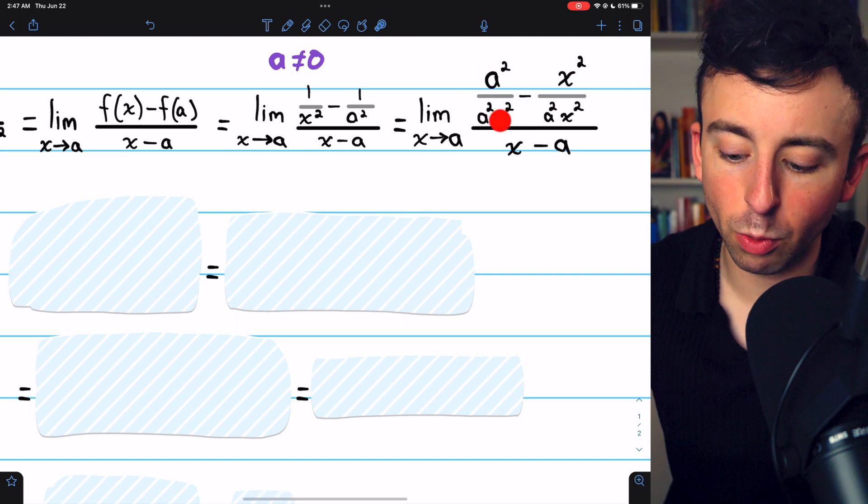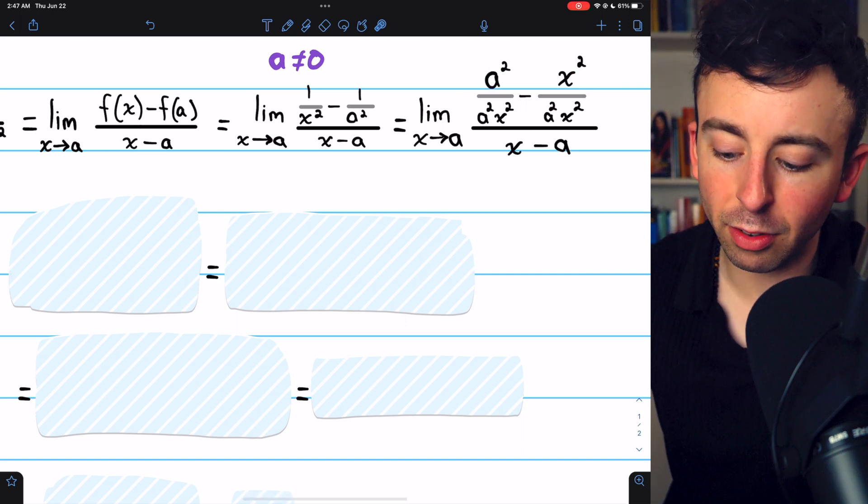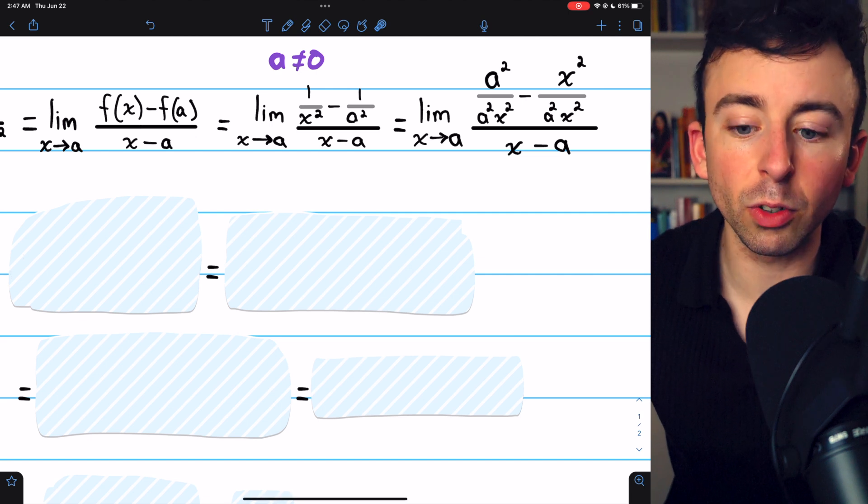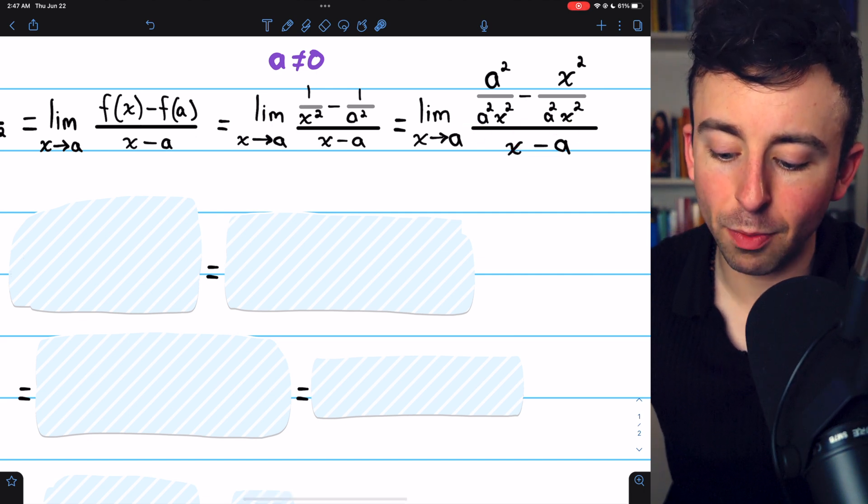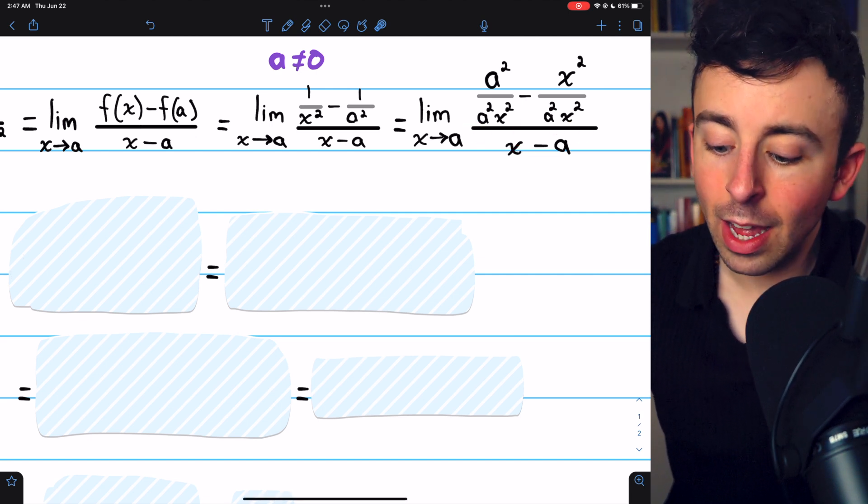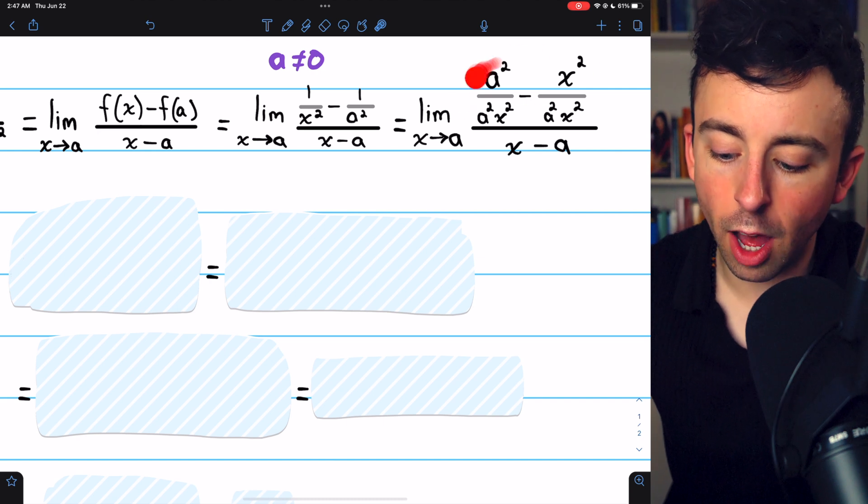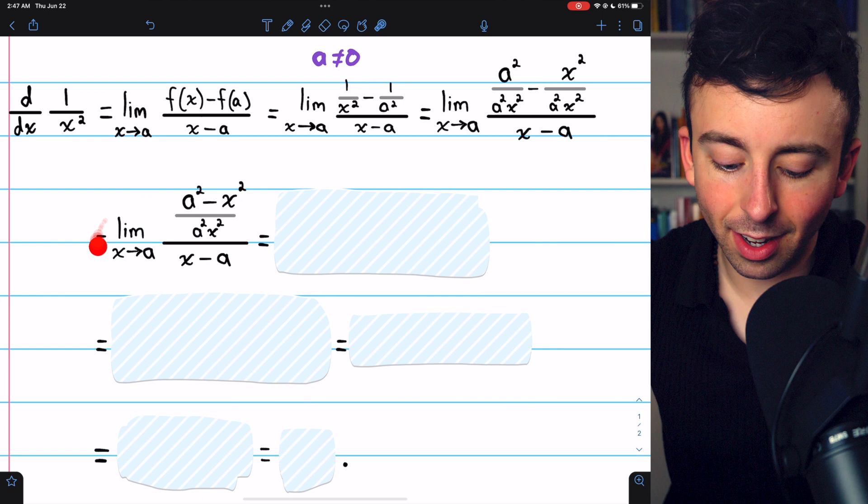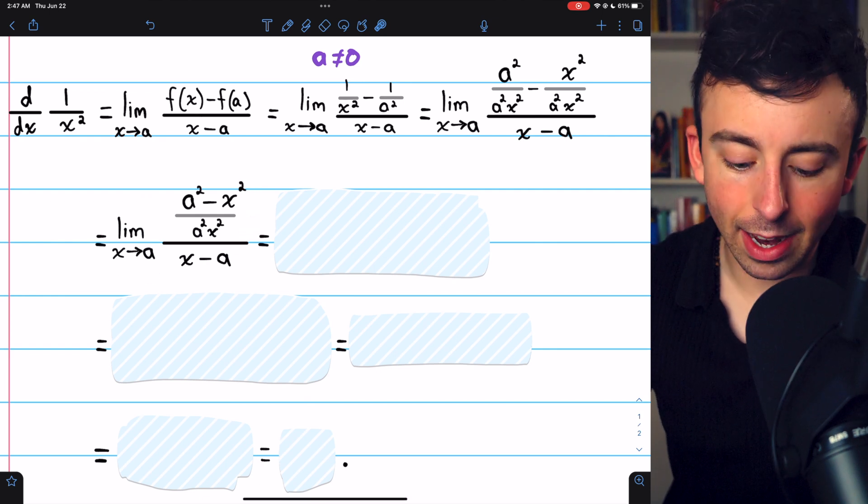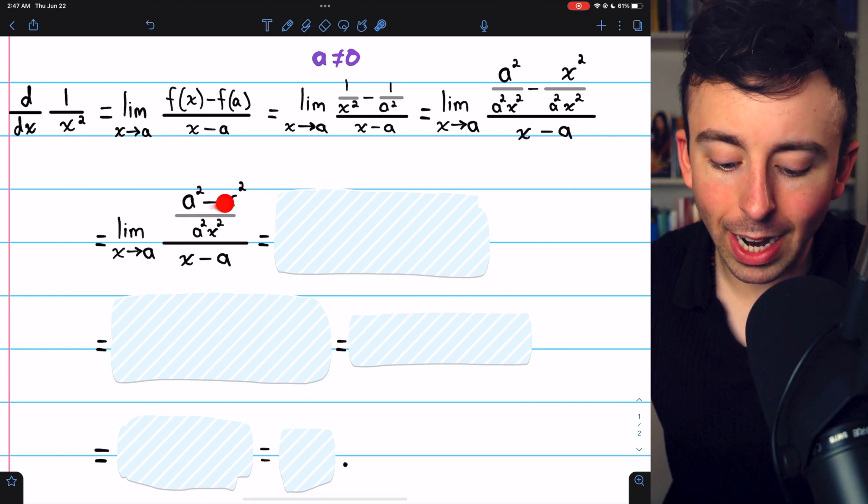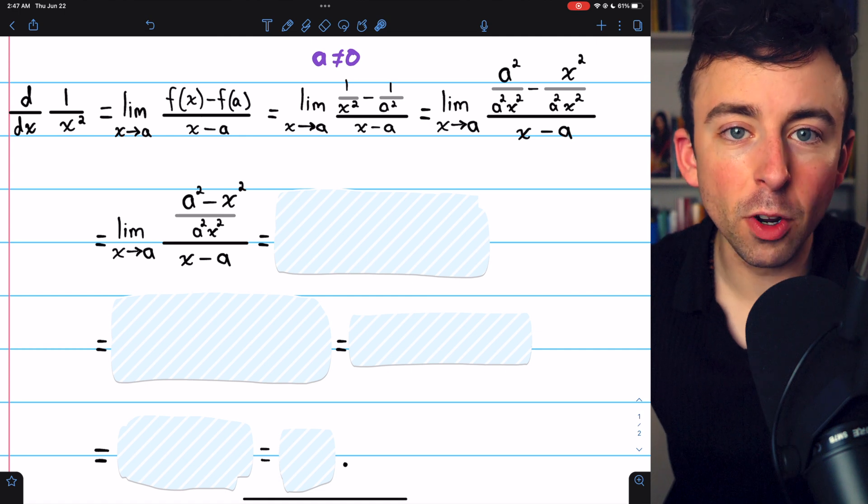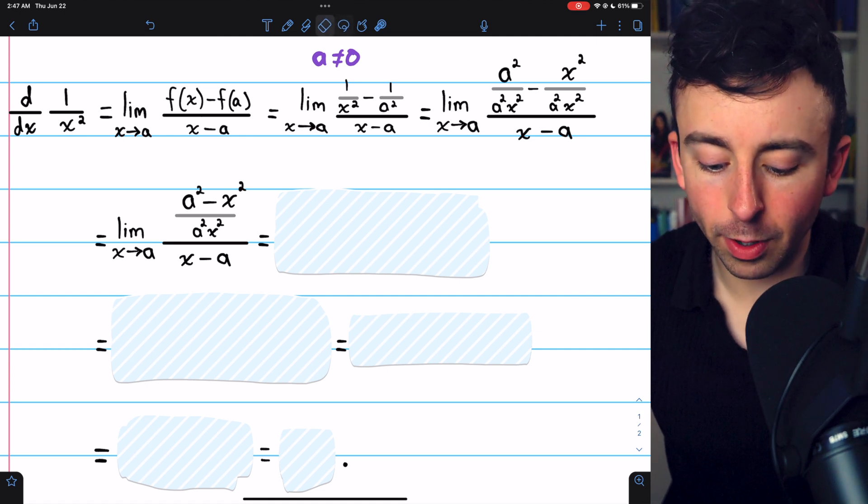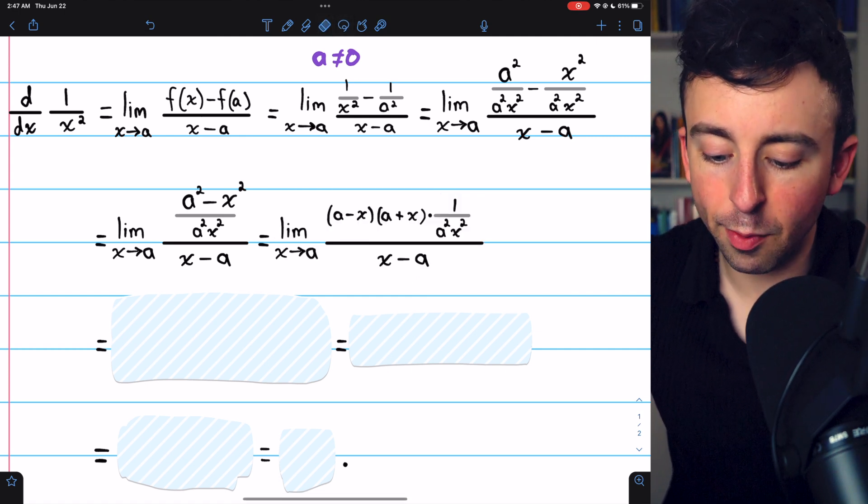A squared over a squared x squared minus x squared over a squared x squared. We still have x minus a in the denominator. Now that these have common denominators, we can combine them into a single fraction. That gets us here. You can see then we have a squared minus x squared in the numerator, and that is a difference of squares. So we can factor it.